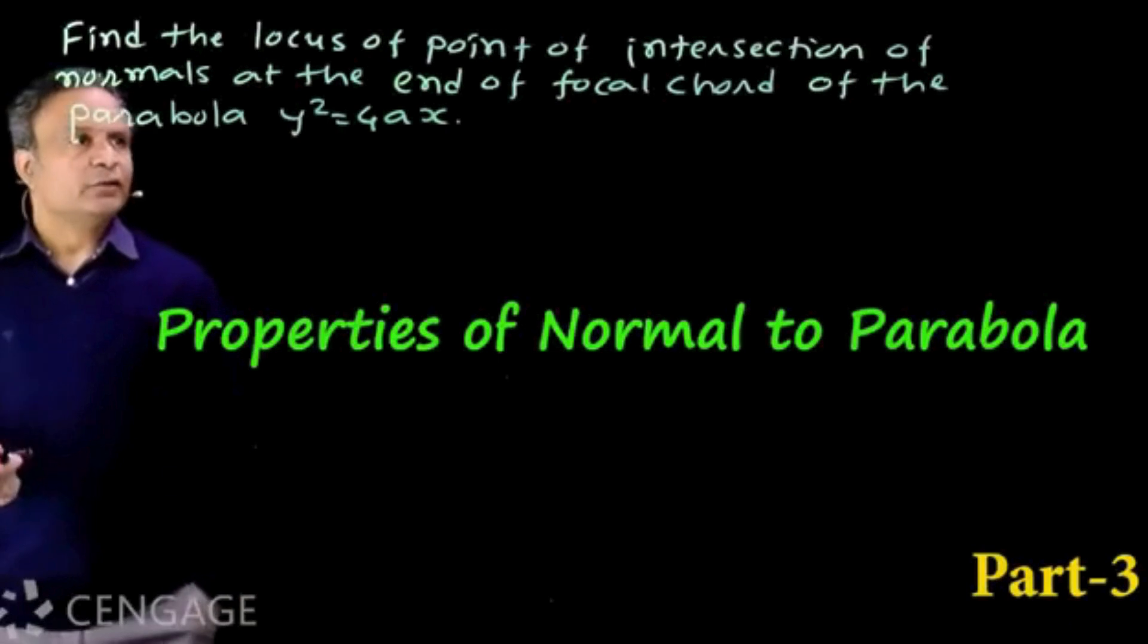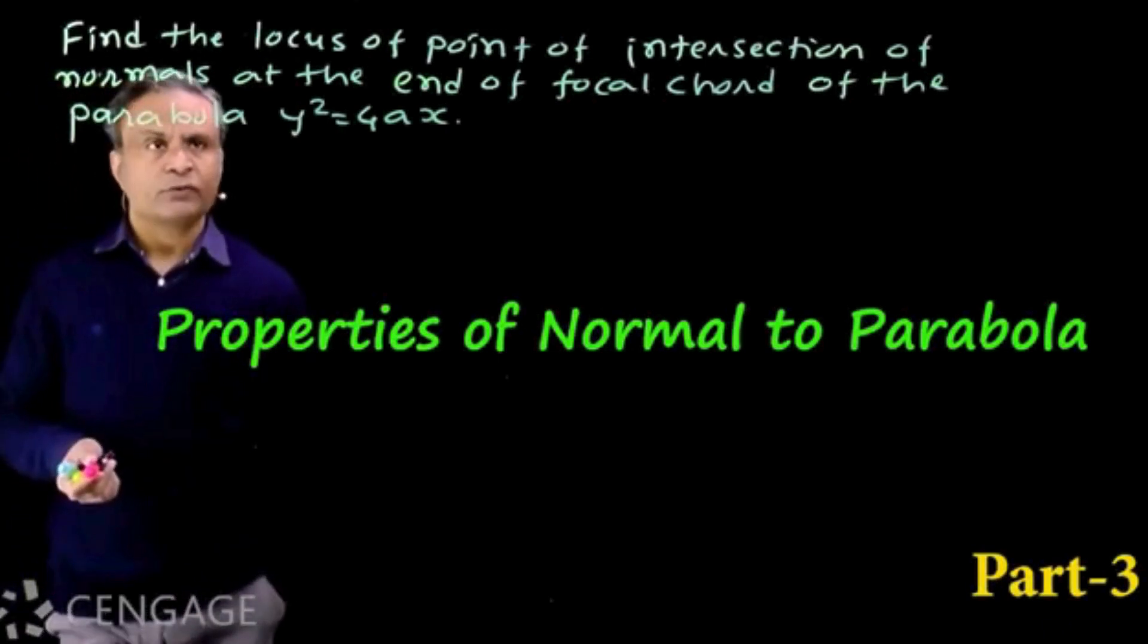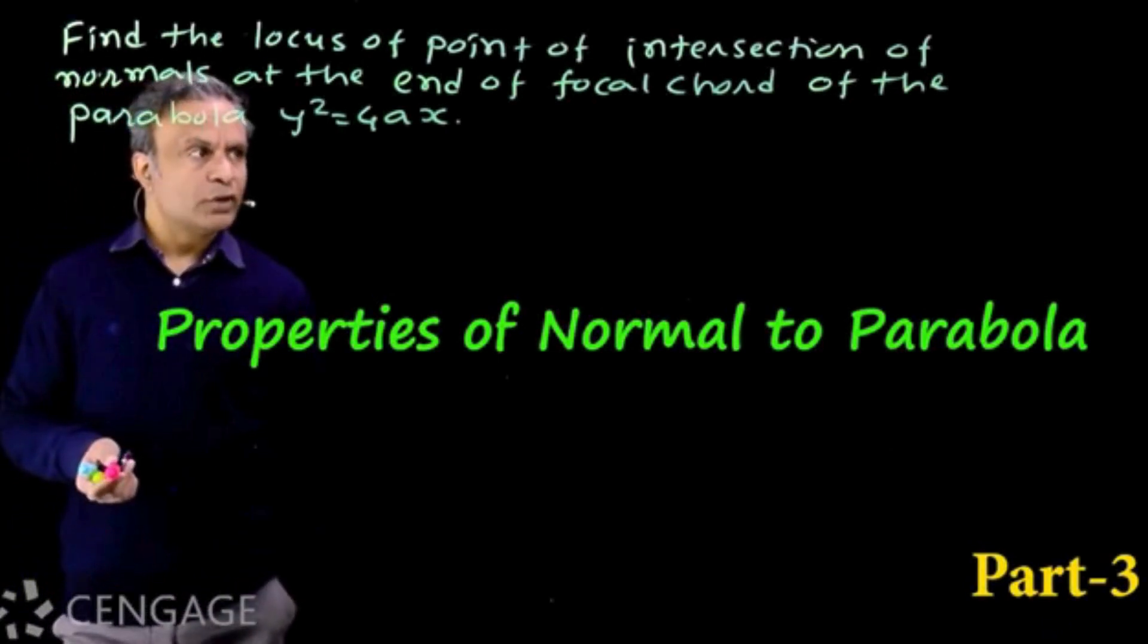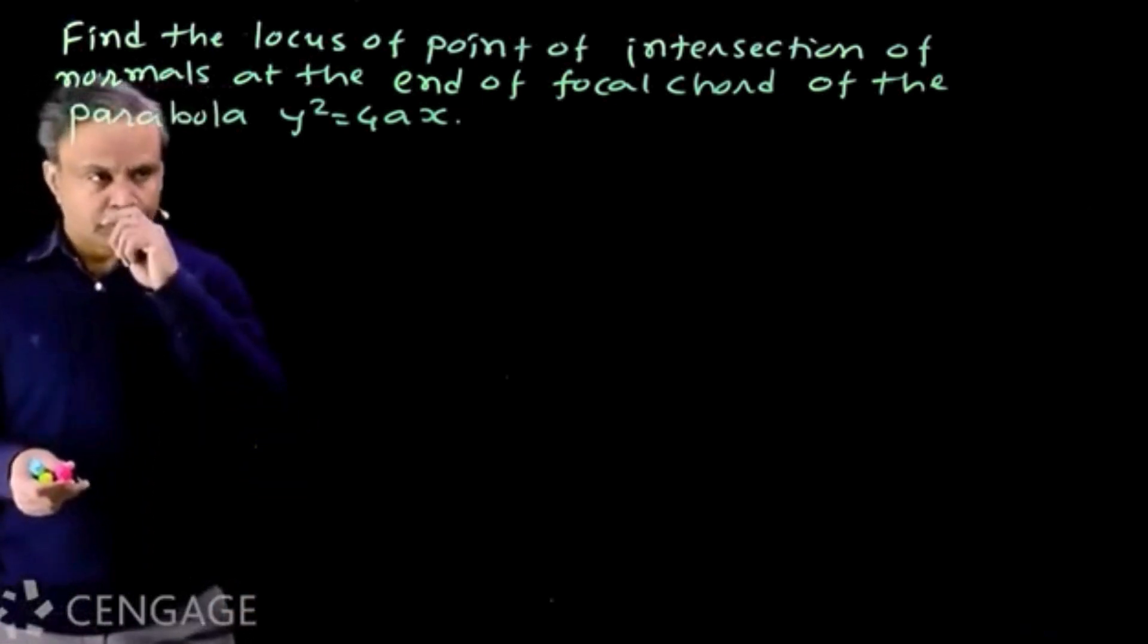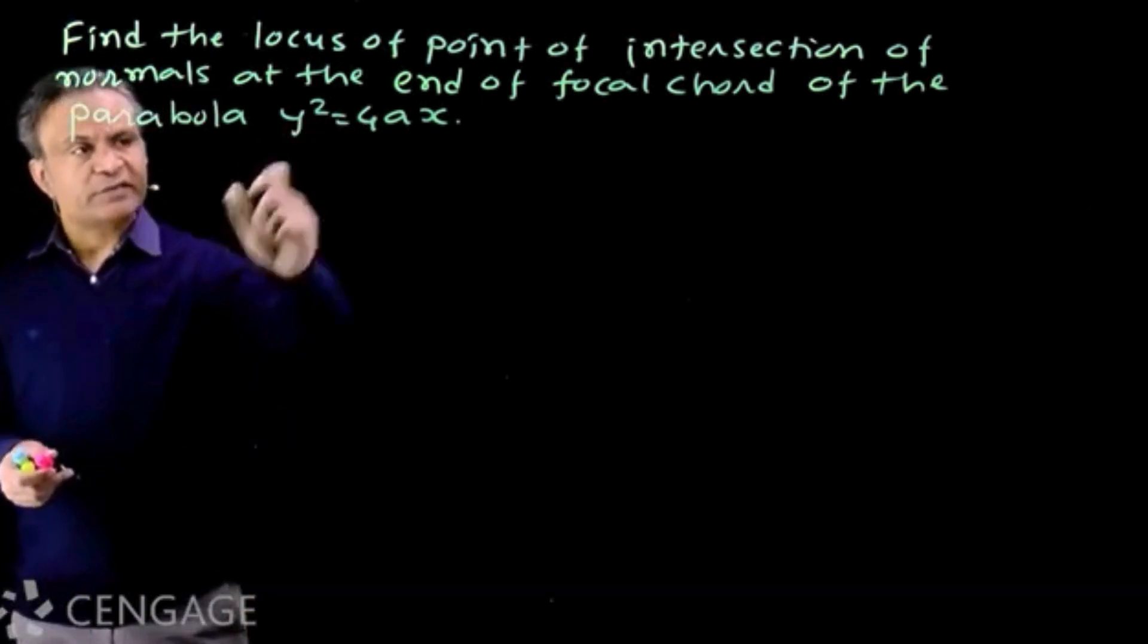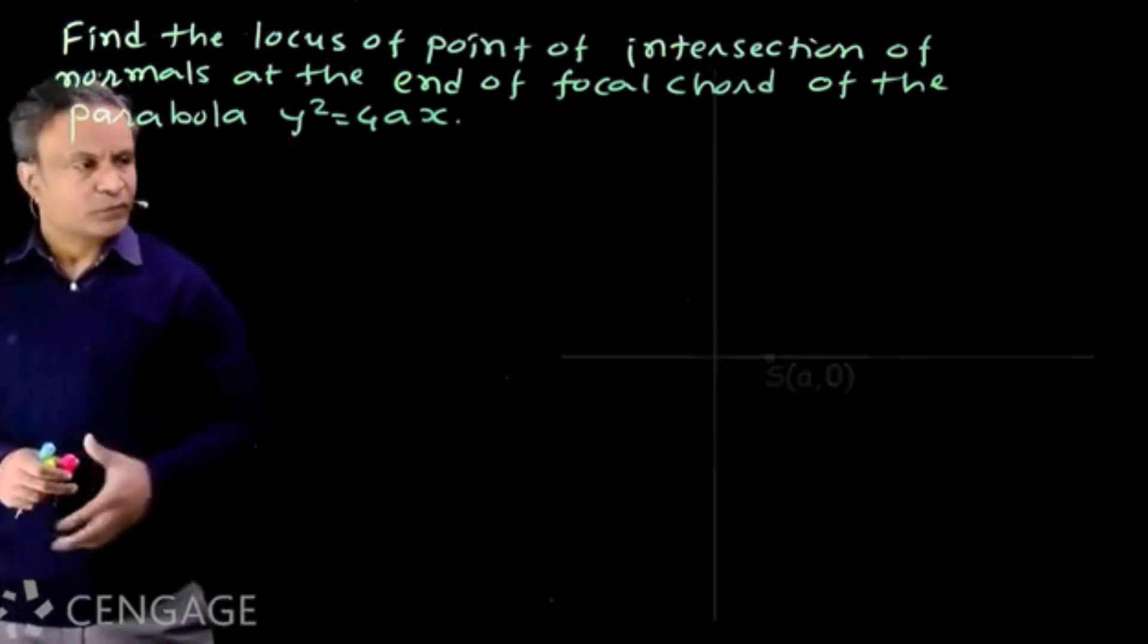Okay, let's start this question. Find the locus of point of intersection of normals at the end of focal chord of the parabola y squared is equal to 4ax. Once again we have standard equation of parabola.